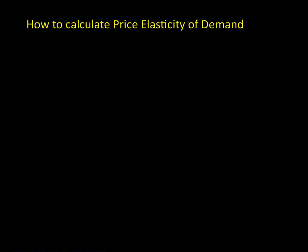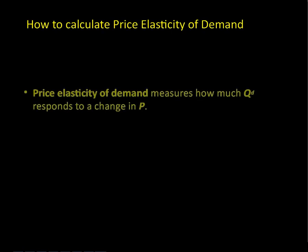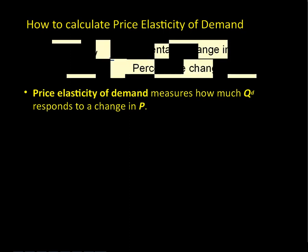Here's how to calculate price elasticity of demand. There's a formula we need to know — it's the percent change in quantity demanded over the percent change in price. An easy way to memorize this is to think about Q over P — like a quarter pounder.